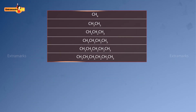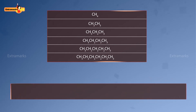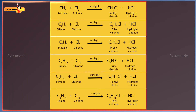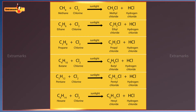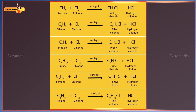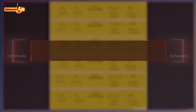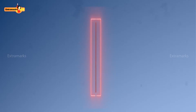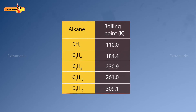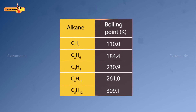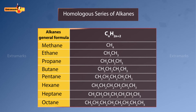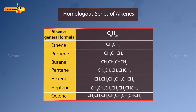All the members of the homologous series of alkanes show similar chemical properties — they will produce compounds having the same functional group when reacted with the same reactant. For example, all alkanes react with chlorine in the presence of sunlight to produce the corresponding alkyl halide. However, the physical properties are not the same; a regular variation is observed in properties such as melting point, boiling point, and density.